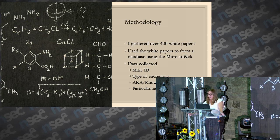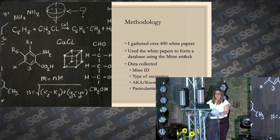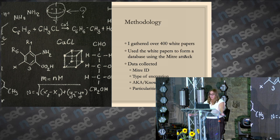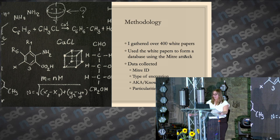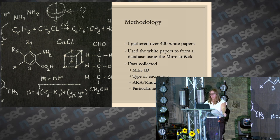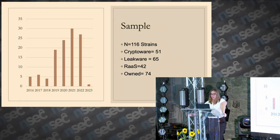For the methodology, I gathered over 400 white papers. I used white papers because I'm a criminologist — my malware analysis skills are non-existent. I applied the MITRE framework to them to study evolution. I collected not only the MITRE IDs but also type of encryption used, AKAs, known associates, and other particulars. I ended up with a sample of 116 strains — 51 were cryptoware and 65 were leakware — spanning 2016 to 2022, with one entry for 2023.